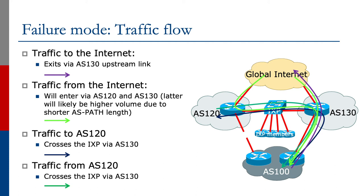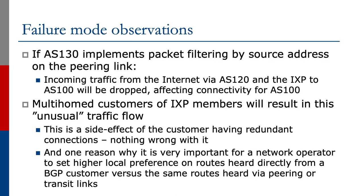Traffic to AS120 crosses the IXP via AS130, and traffic from AS120 will cross the IXP via AS130. The diagram shows the traffic flow with color-coded arrows. Some observations about this failure mode: if AS130 implements packet filtering by source address on the peering link, then this will seriously affect the connectivity experienced by AS100, as incoming traffic from the Internet via AS120 and the Exchange Point will be dropped. Multi-homed customers of IXP members will result in this unusual traffic flow, which is a side effect of the customer having redundant connections to upstream providers. It's not a problem, and it's one reason why it is very important for a network operator to set higher local preference on routes heard directly from a BGP customer versus the same routes heard via peering or transit links. Failure to set local preference properly could result in peer or transit traffic going over the Exchange Point rather than over the direct links.